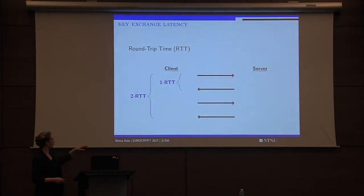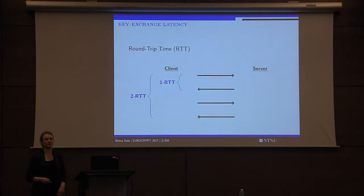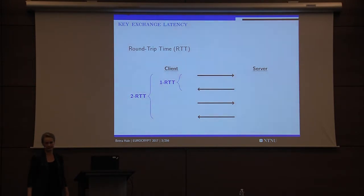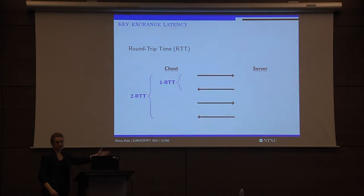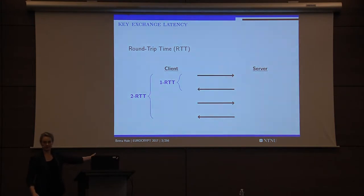We can say one round trip or two round trips. If you're talking about key exchange with six round trips, we might as well give up because Track B wins and gets done first. A round trip takes a while, so we want to minimize that if possible.